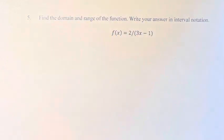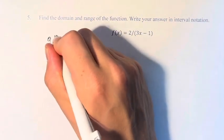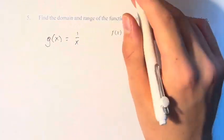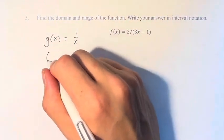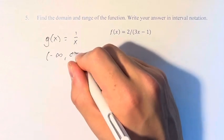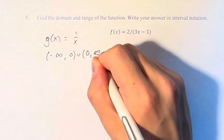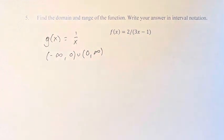We start with the function g(x) equals 1 over x. It has a domain and range of negative infinity to 0, not inclusive, and 0 to infinity. So basically every value except for 0.